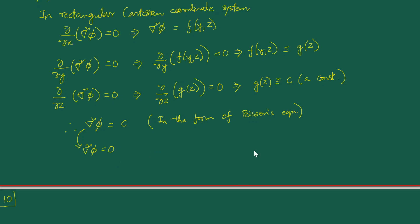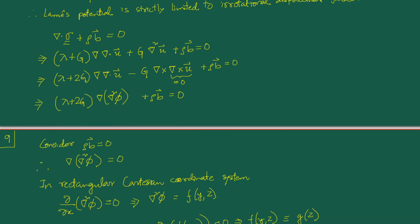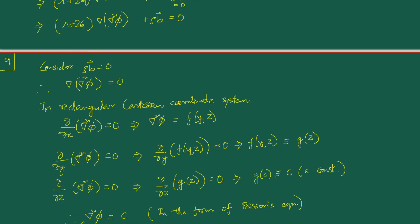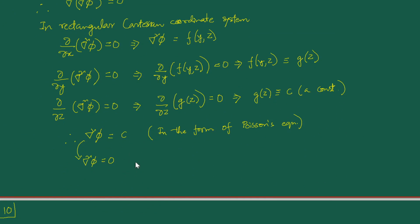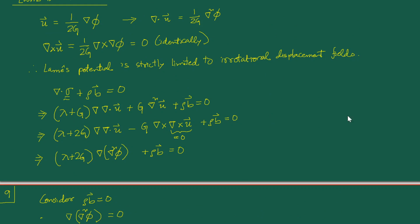However, we are not perfectly happy because we are working under the restriction that we are strictly limited to irrotational displacement fields. If we didn't have to work under this restriction, the Lamé potential would be perfect, since it gives rise to this very convenient Poisson/Laplace equation form whose solutions are known. Unfortunately, this framework works only for irrotational displacement fields.